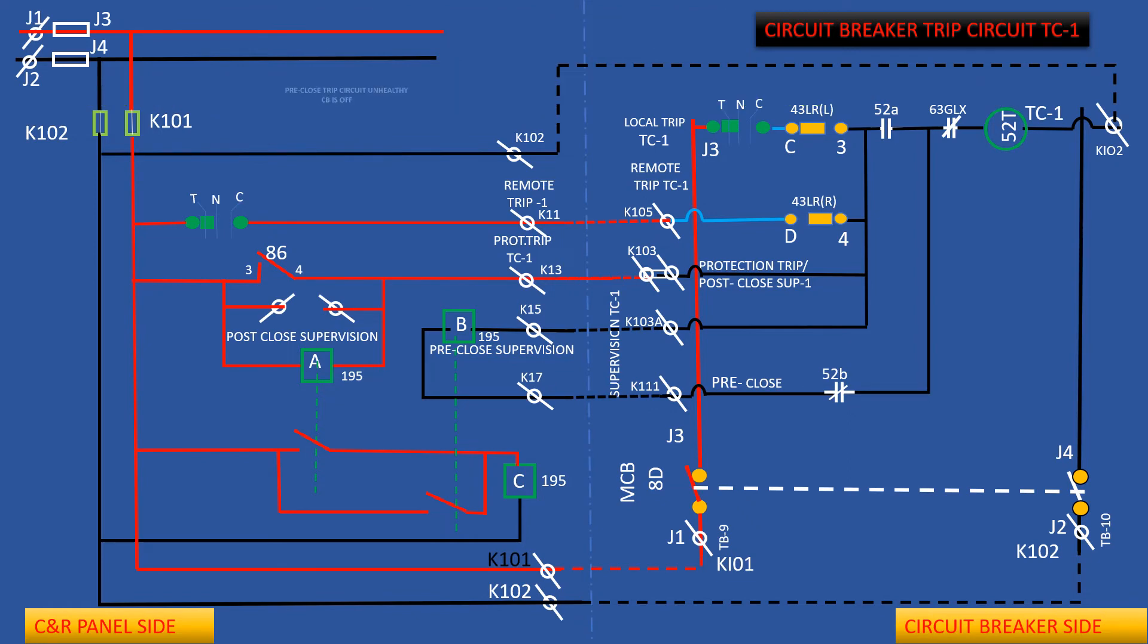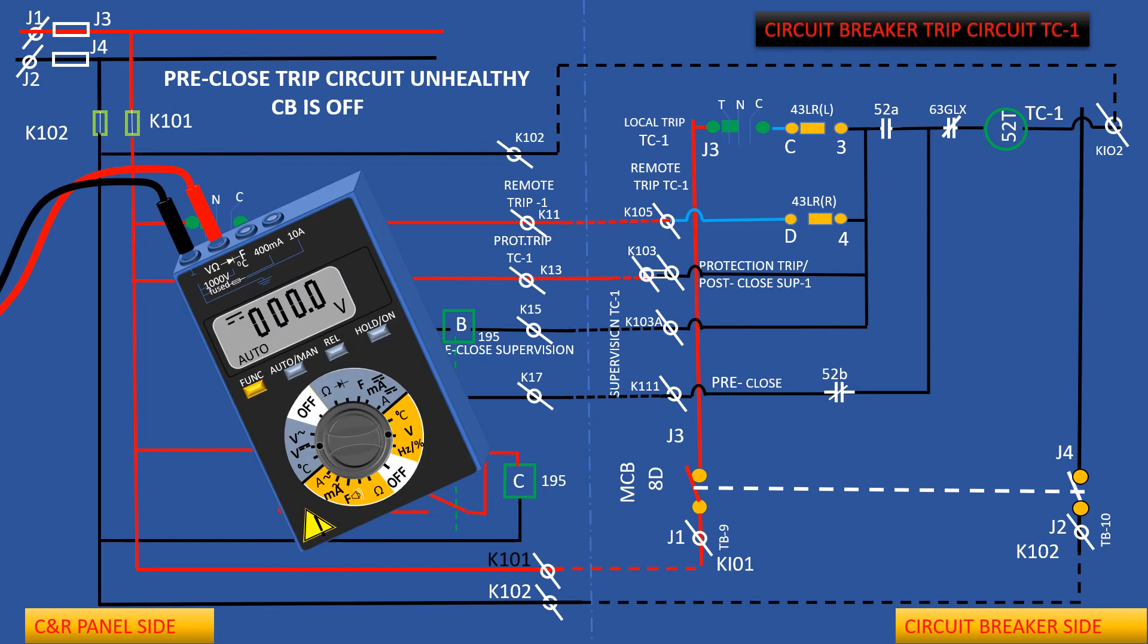Pre-close trip circuit unhealthy due to fault at trip circuit. Disconnect the connection at terminal block ferrule number, wire number K103 first. Measure voltage at each point as shown. Watch multimeter reading also.